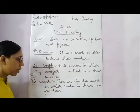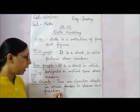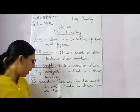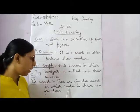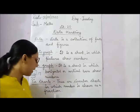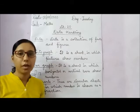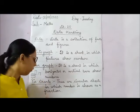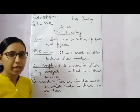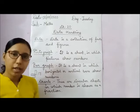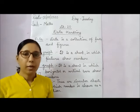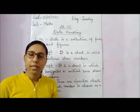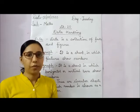Then pie charts — these are circular charts in which numbers are shown as fractions. Today, we will learn about tally marks and pictographs.